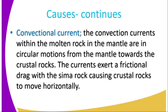Then we have the third cause, which is the convection current. The convection currents within the molten material in the mantle are in circular motion. Remember, convection current is in continuous motion. Magma is in continuous circular motion, which we refer to as the convection movement. And when they are moving, the current will exert a friction that drags the sima rocks, causing the crust rocks to move horizontally.